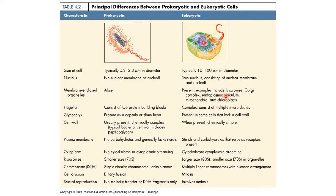Membrane-enclosed organelles are absent in prokaryotes and present in eukaryotes. Examples include lysosomes, Golgi apparatus, endoplasmic reticulum, mitochondria, and chloroplast. Regarding flagella: in prokaryotes it consists of two protein building blocks, while in eukaryotes the flagella is more complex, consisting of multiple microtubules.